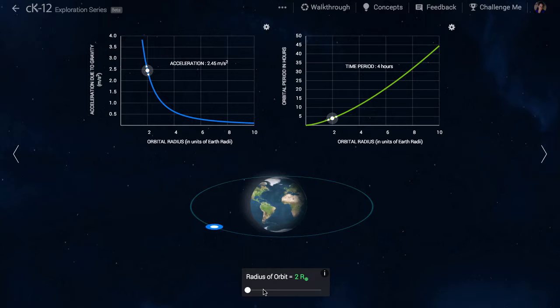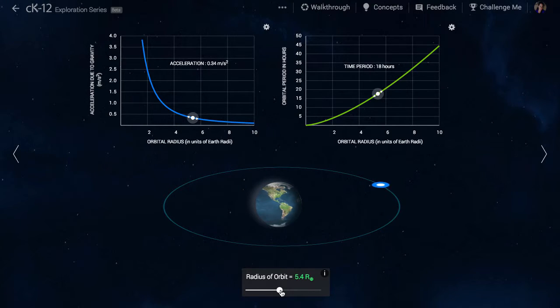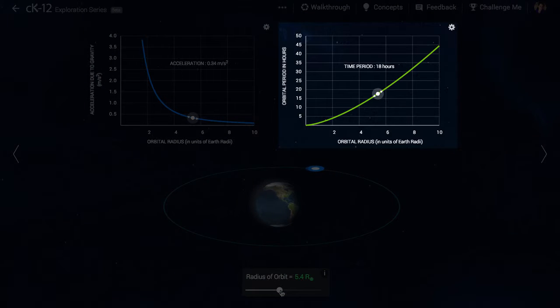We can adjust the distance from the spacecraft to the center of the Earth with a slider. The top right graph shows the orbital period on the vertical axis. This is the amount of time it takes a spacecraft to orbit once. The horizontal axis is the radius of the orbit. As expected, it takes longer to orbit at greater distance.